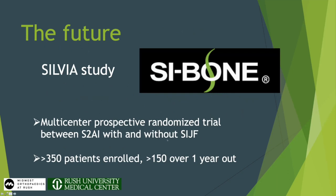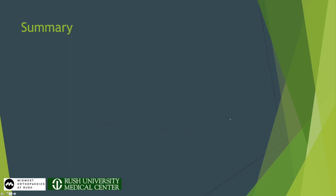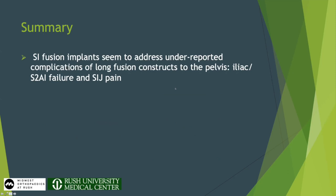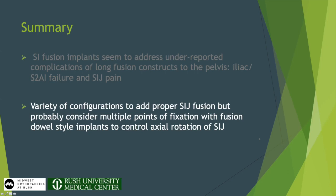We're looking forward to the published data from the Sylvia study — the dowel plus S2AI screw prospective randomized study by SI Bone, which has a very robust design. We're all pretty excited to see what the longer-term data shows, because I think we're going to see some unintended consequences of this approach that need to be hashed out. In summary, SI fusion implants in the setting of deformity seem to protect S2AI and pelvic screws, seem to prevent some acute failure, and may prevent some SI joint dysfunction. Multiple points of fixation and true fusion implants represent the best approach.